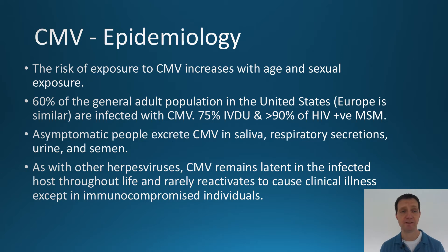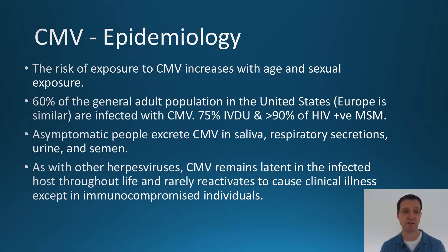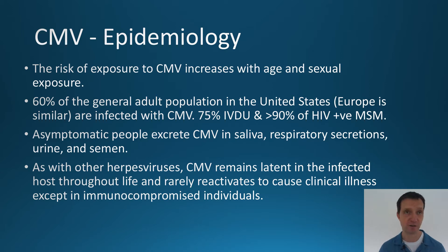In terms of the epidemiology, the risk of exposure increases with age and also with sexual exposure. In the United States and most countries in Europe, the general adult population rate of infection is around about 60 percent. It increases if you're an IV drug user, and if you're HIV-positive MSM — that's men who have sex with men — it can be over 90 percent. Regardless of whether you have HIV or not, the vast majority of people are asymptomatic and don't have any symptoms, but will still secrete CMV in their saliva, respiratory secretions, urine, and semen, so it can quite easily be passed through sex and even kissing, but there's nothing to be worried about.